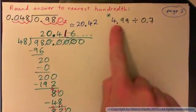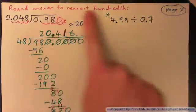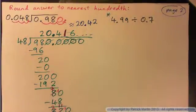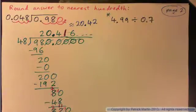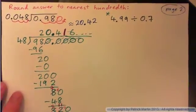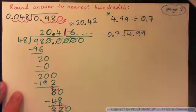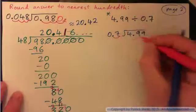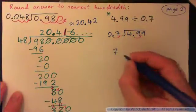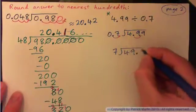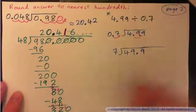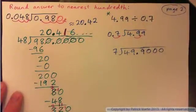Please press pause and do the next one by yourself — round the answer to the nearest hundredth. If you make a mistake, check the video to figure out where you went wrong, and that'll help with the homework too. Okay, so: 0.7 into 4.99. Move the decimal point over one space here and here, giving 7 into 49.9. I'm going to add on a bunch of zeros.